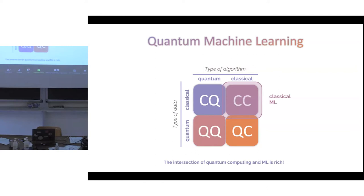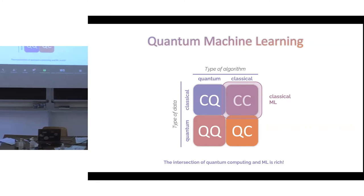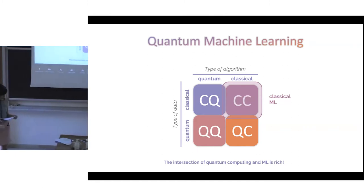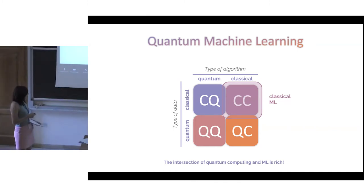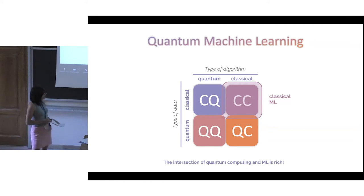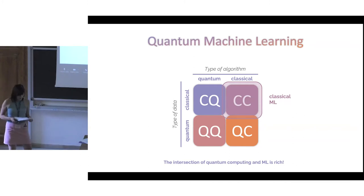The next question we should be asking is understanding what situations we can expect this advantage to emerge. In this chart — which you'll find practically in every QML talk — we can break down this broad topic into four main areas according to either the type of data we're analyzing or the type of algorithm we're dealing with. We can start with the top right corner: classical algorithms and classical data.